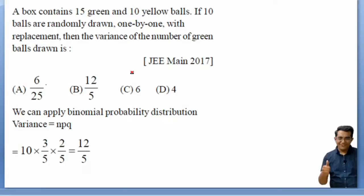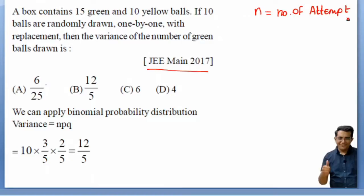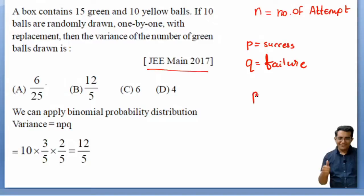The first question in front of us is from JEE 2017. Before starting, I would remind you that N means number of attempts, and P stands for success. For example, if you toss a coin, the probability of getting head is 1 by 2, and the probability of getting tail — that means you lose — is also 1 by 2. So probability of success plus failure is always equal to 1.